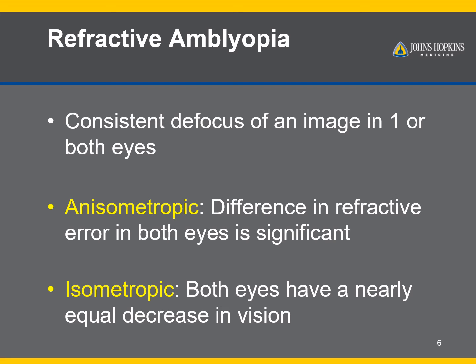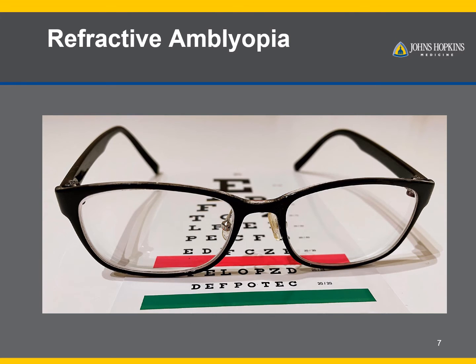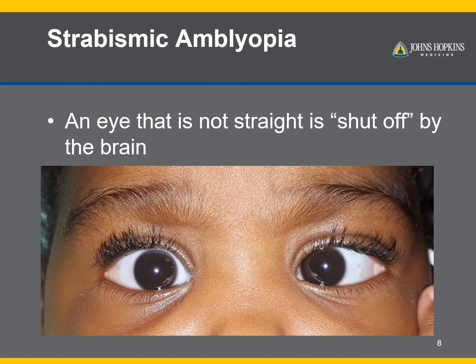Isometropic amblyopia is less common and occurs when both eyes have similar but severe uncorrected refractive error. In this case, both eyes are affected as neither develops a proper connection with the brain. For more information on refractive errors, please check out our video on refractive errors.